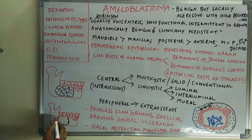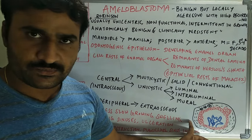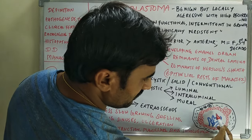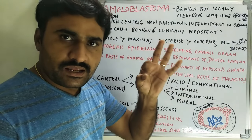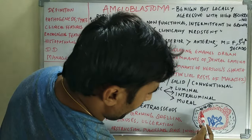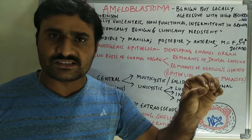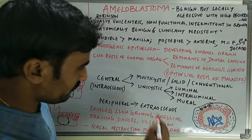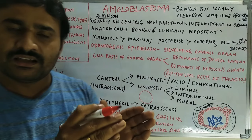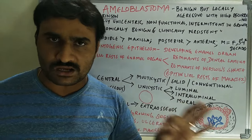Taking the cystic lining — the red lines represent the epithelium and the center hollow part is the lumen. We also have connective tissue in the epithelial wall. Luminal means the epithelium lining the lumen. If the tumor develops from this luminal part it is called luminal amyloblastoma.